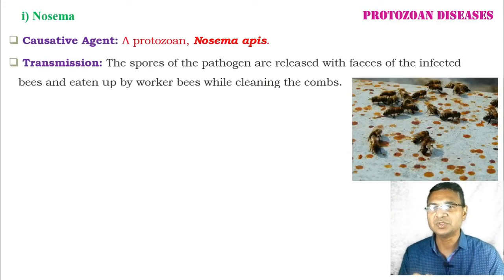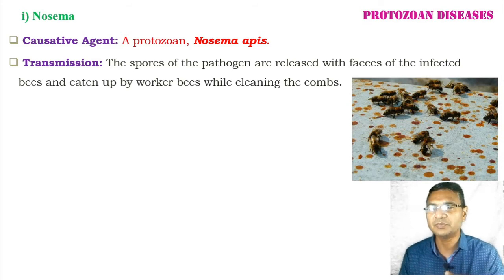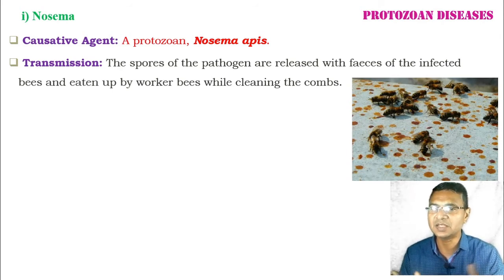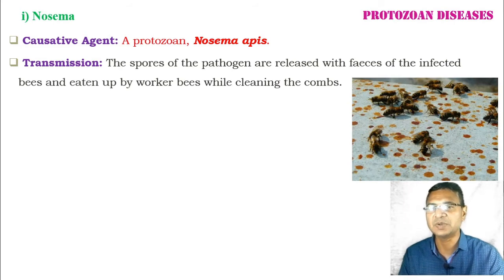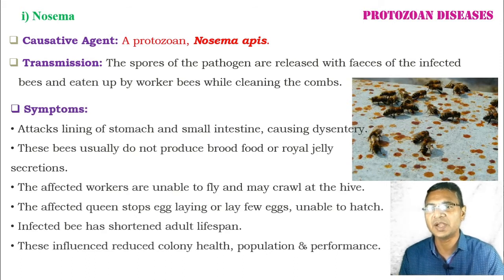After bacterial diseases, we move to the protozoal disease: Nosema, whose causative agent is the protozoan Nosema apis. The spores of this protozoan are released with the fecal matter of infected bees. During cleaning of the comb — a duty performed by nurse bees — the spores are easily eaten by other worker bees, transferring Nosema apis from one bee to another within the colony.